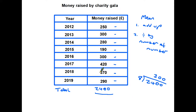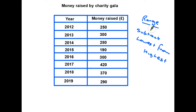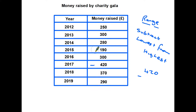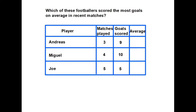The mean average amount of money raised each year at the gala is £300. Now for the range, we subtract the lowest from the highest. The highest amount raised in any year was in 2017, when they raised £420. The lowest was in 2015, which was £190. Taking 420 minus 190, we find the range of amounts raised is £230.